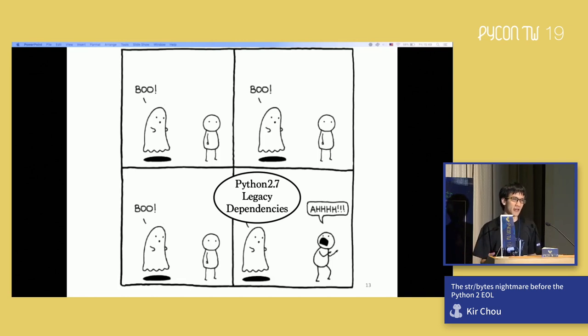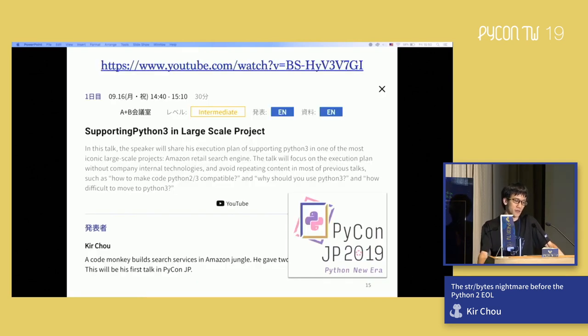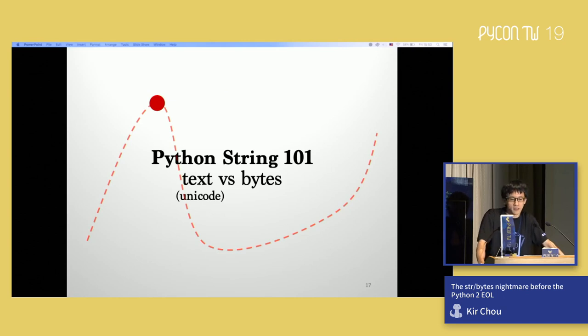However, the reality is almost every company or tons of people who work on projects have legacy dependency in Python 2.7. They always complain like, I have some dependency in 2.7 so I cannot use Python 3. So the background caused me to work on supporting Python 3 in my company. It's basically moving all the packages to support Python 3. I did give a talk in PyCon Japan a few days before about supporting Python 3 in large scale projects. So if you are interested, you can search PyCon Japan and their YouTube channel should have my talk there.